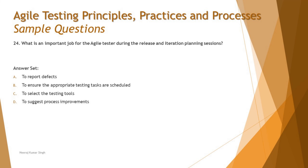Option C says 'to select the testing tools' — that happens after planning, once you have the planned scope of work. You can determine the scope of tool usage (e.g., how much automation is needed), but the actual selection happens after the planning phase. So you decide on using tools during planning, but not actually selecting them. Option D says 'to suggest process improvements' — that's the end goal, happening after the process.